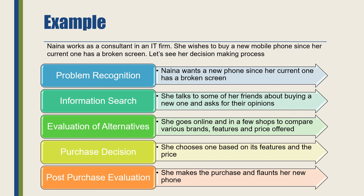Stage three, evaluation of alternatives: Naina goes online or to a few shops to compare various brands, features, models, and prices — checking what is within or outside her budget. Stage four, the purchase decision: after going through multiple options, she zeros in on one particular brand with a specific set of features that is well within her budget, and she buys that phone.